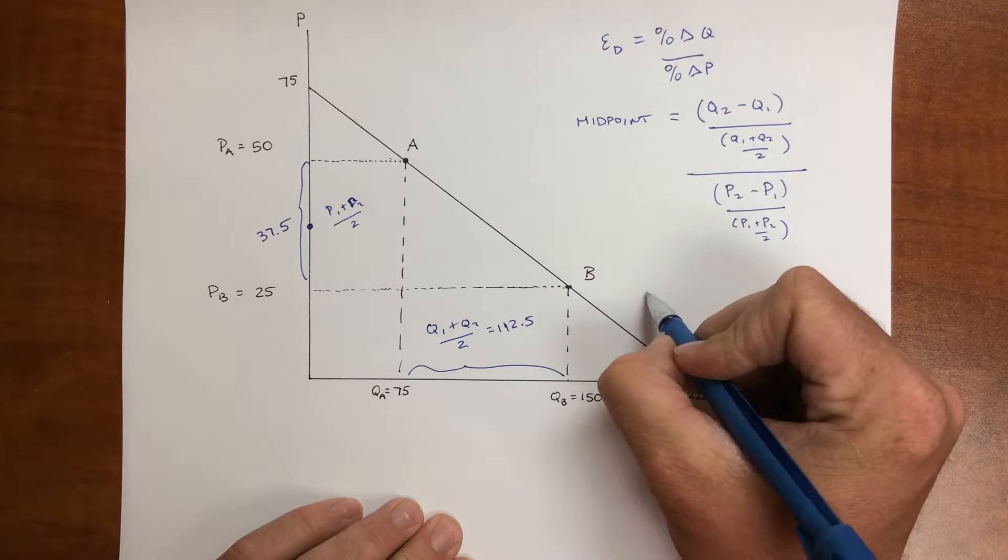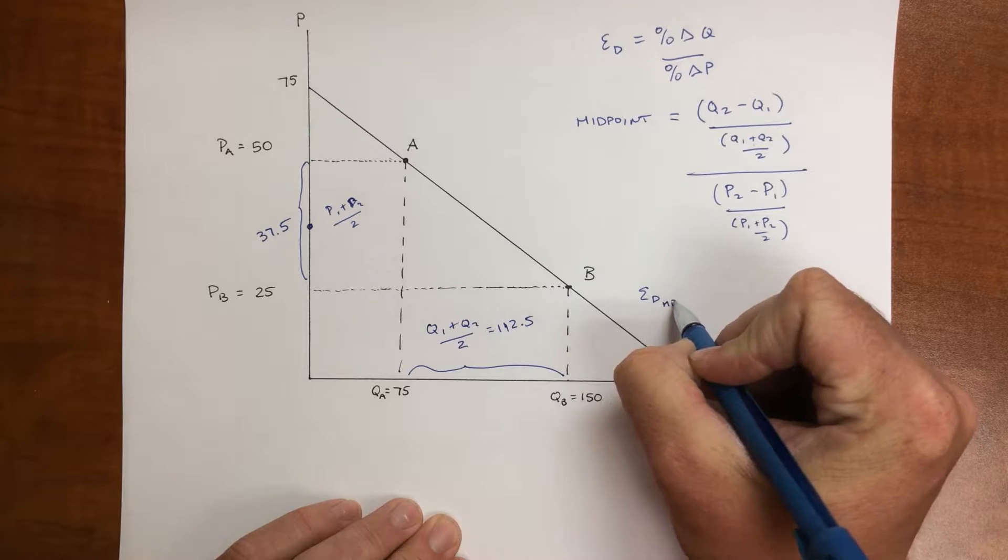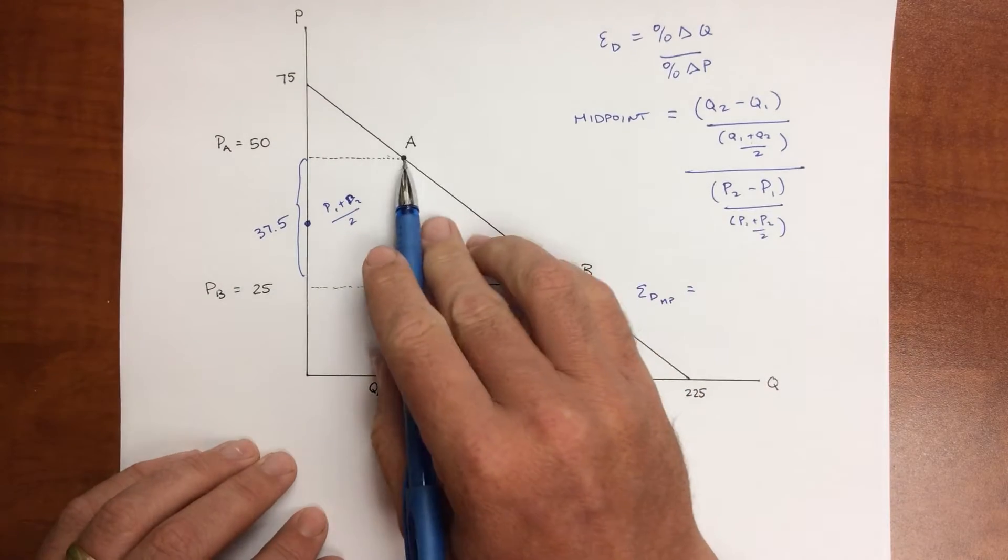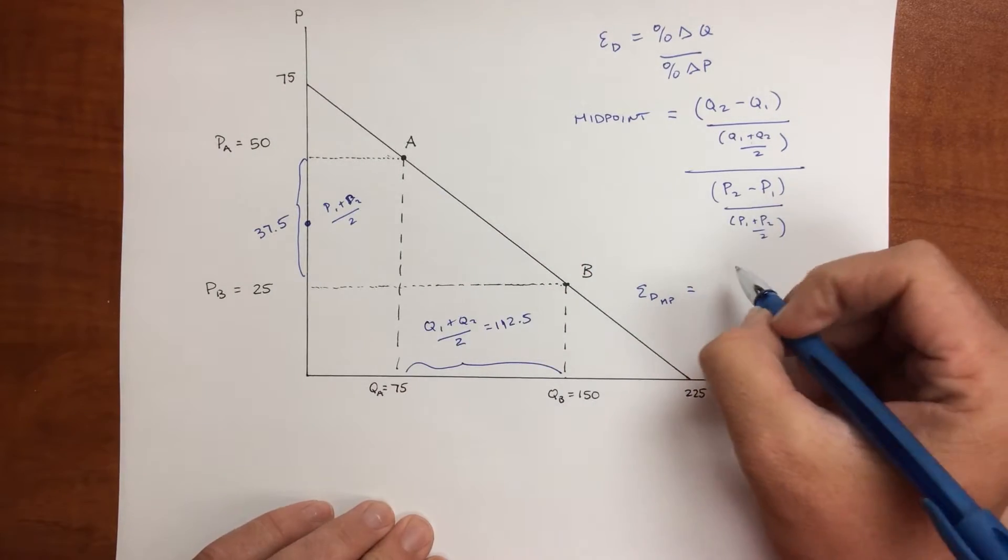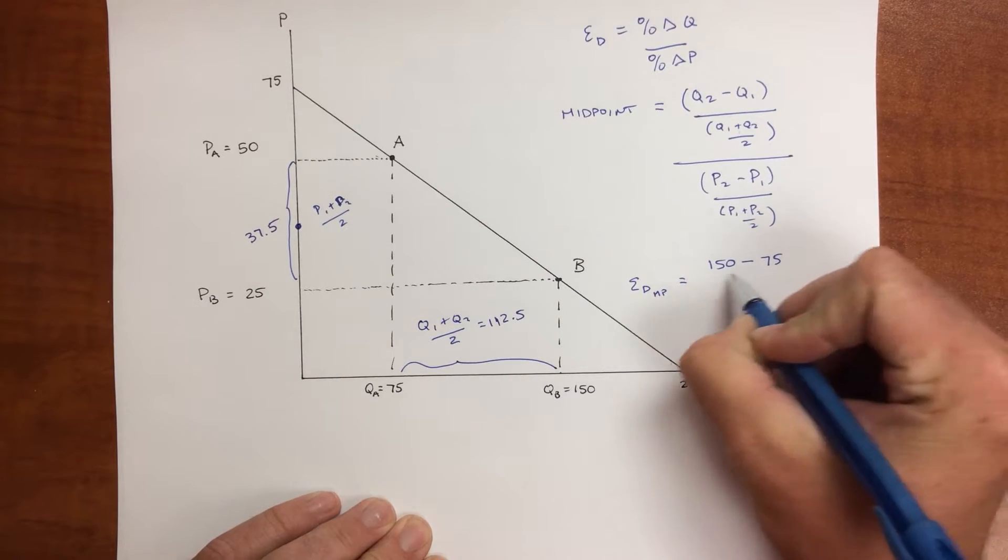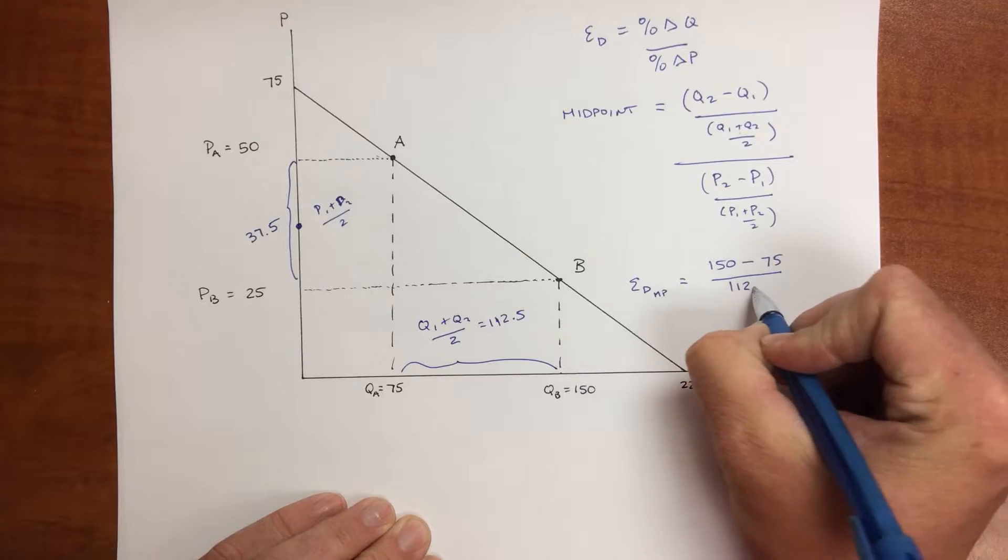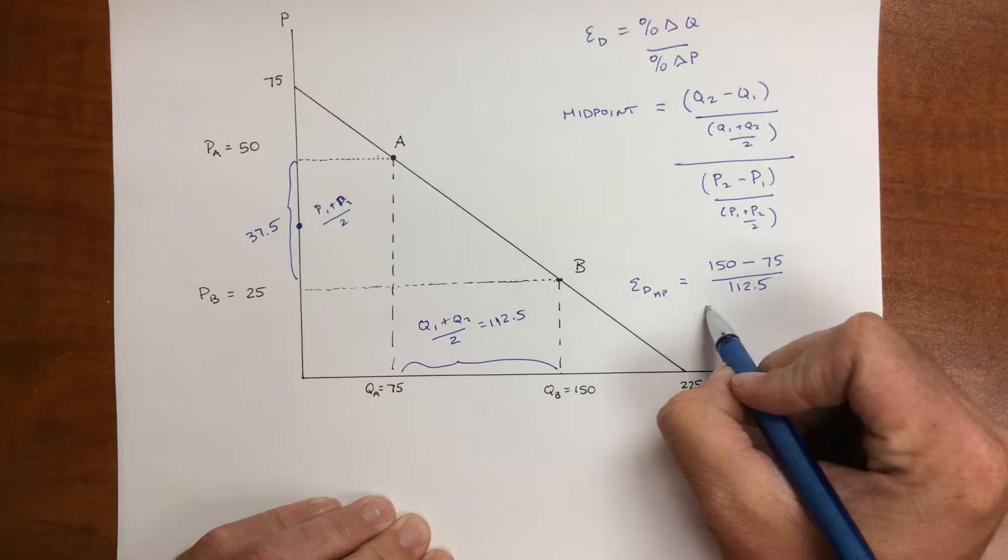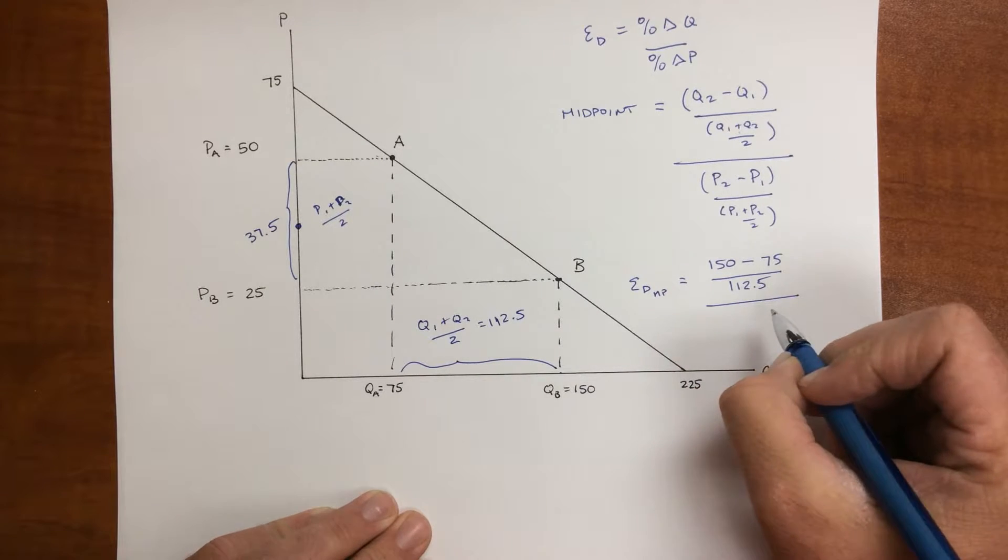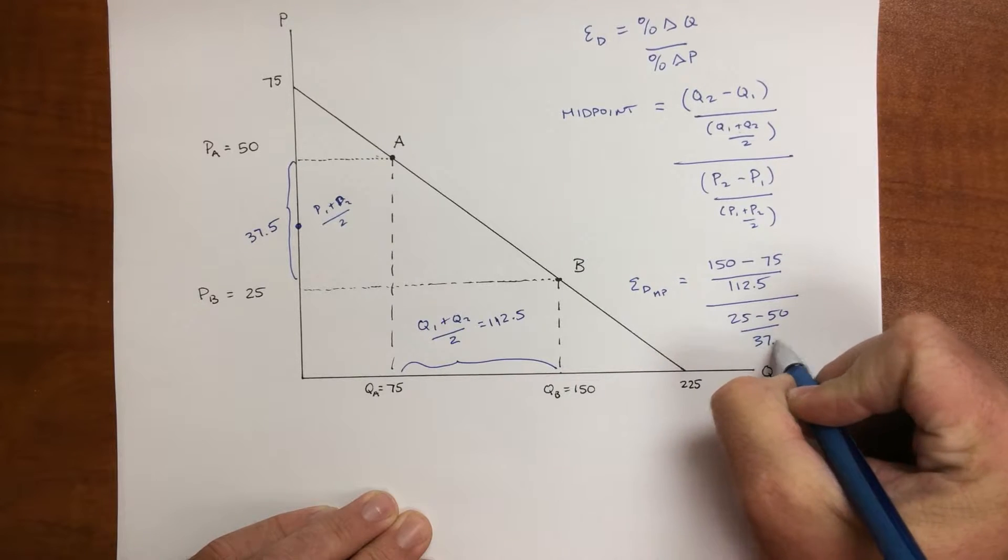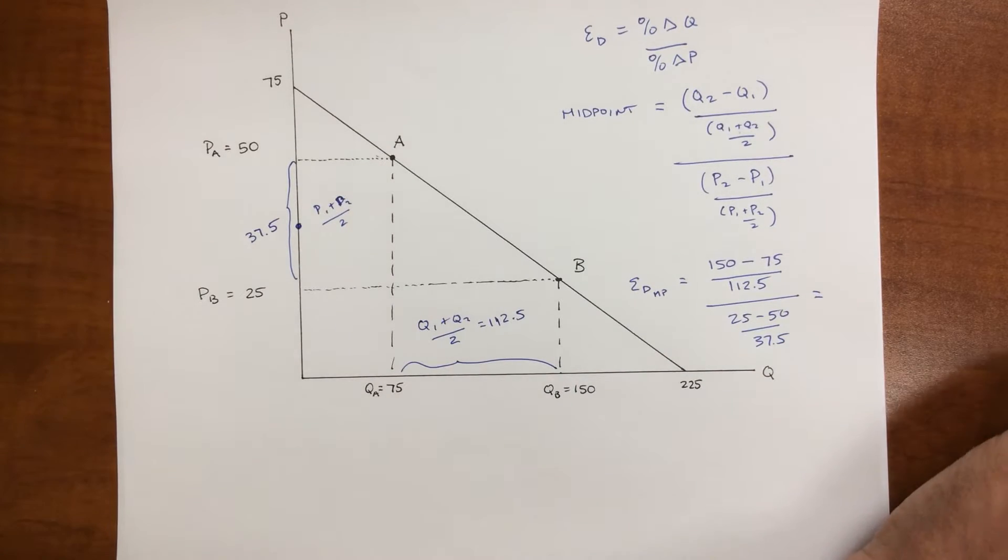So now when I calculate my elasticity of demand using the midpoint method, I'll get Q2 minus Q1. Let's assume we're going from A to B. So in that case, Q2 would be 150 minus Q1, which is 75, divided by 112.5, because that's Q1 plus Q2 divided by 2, or the midpoint between the two.